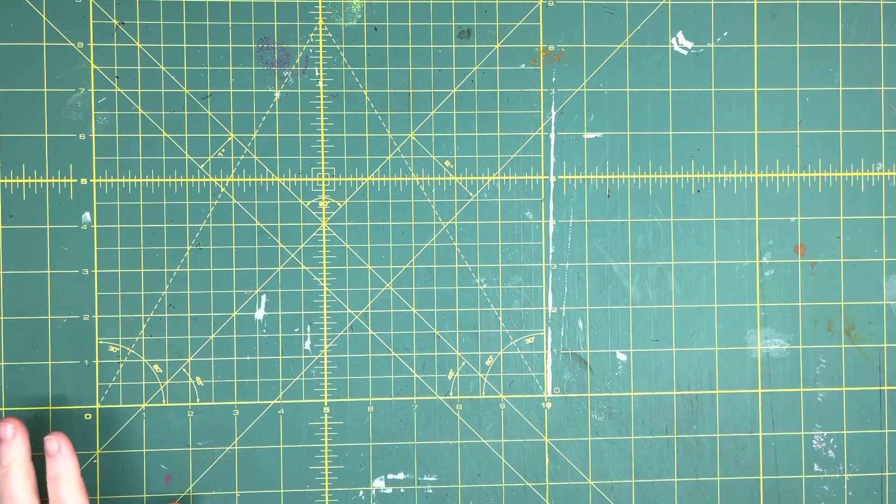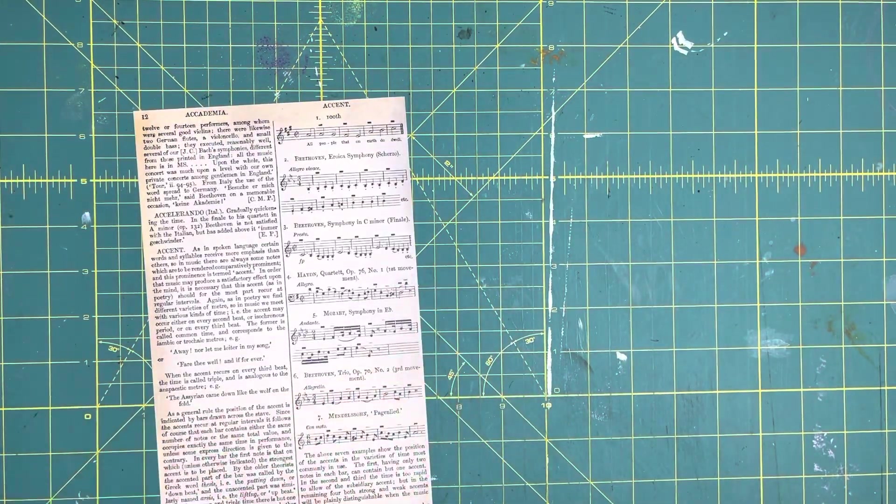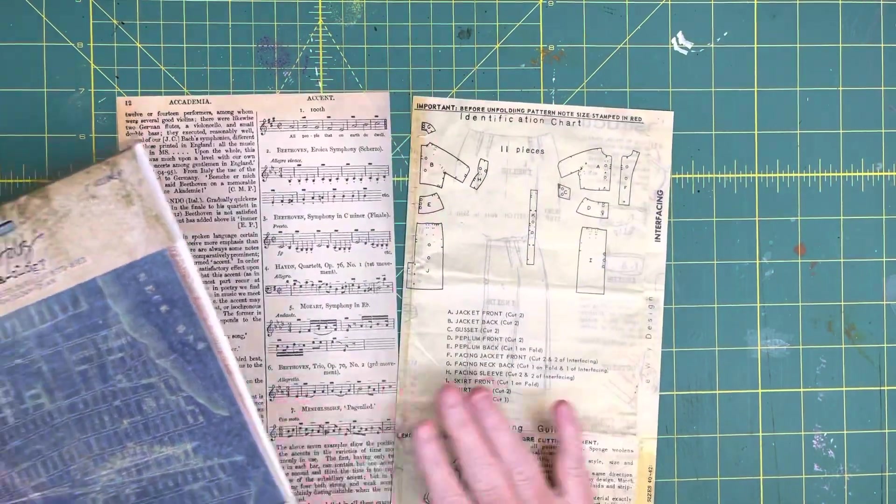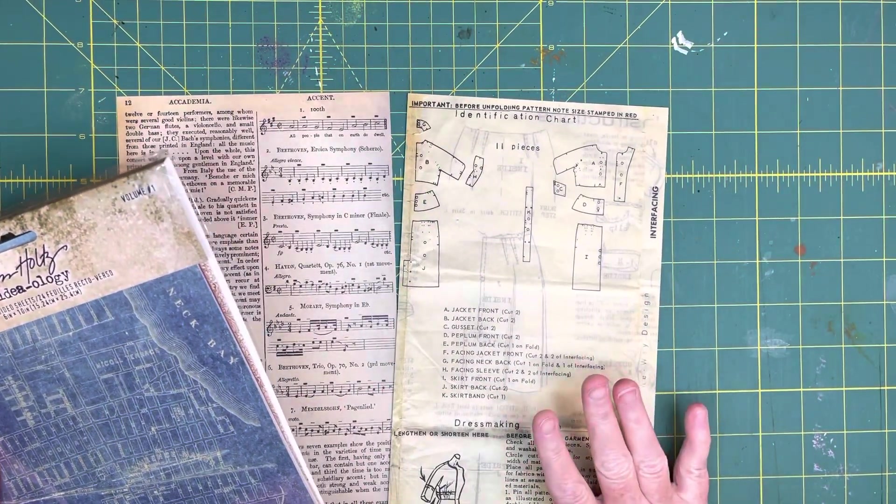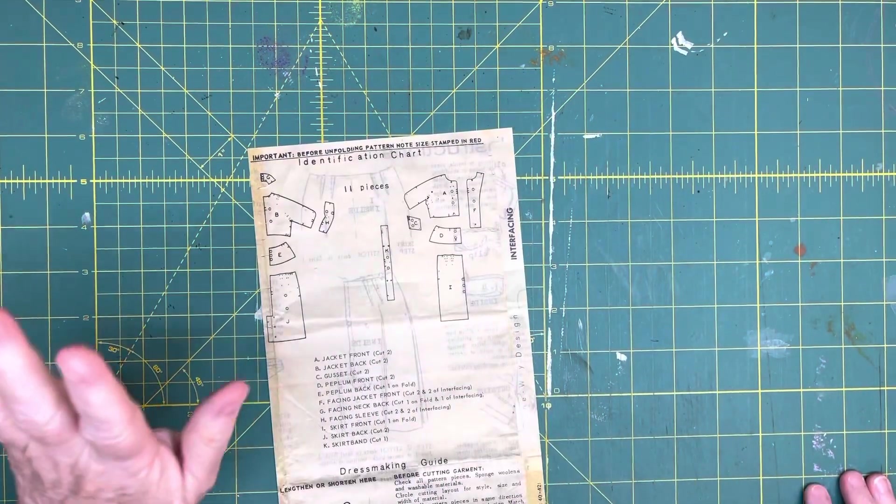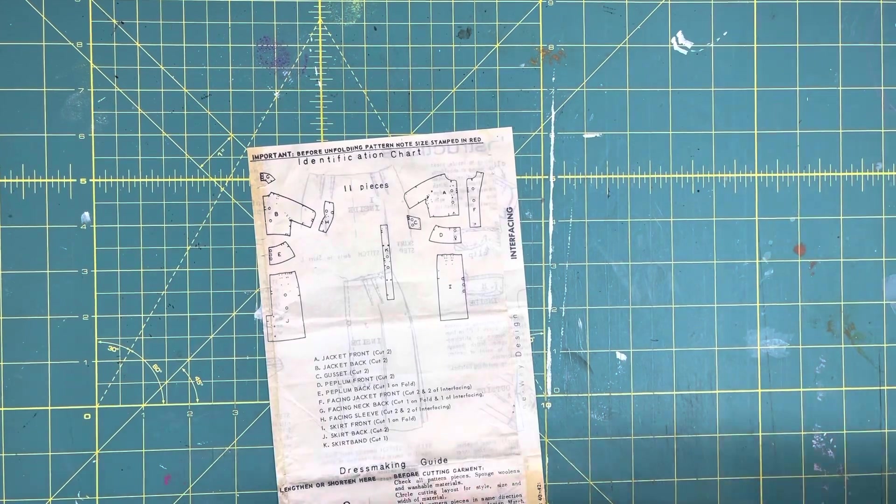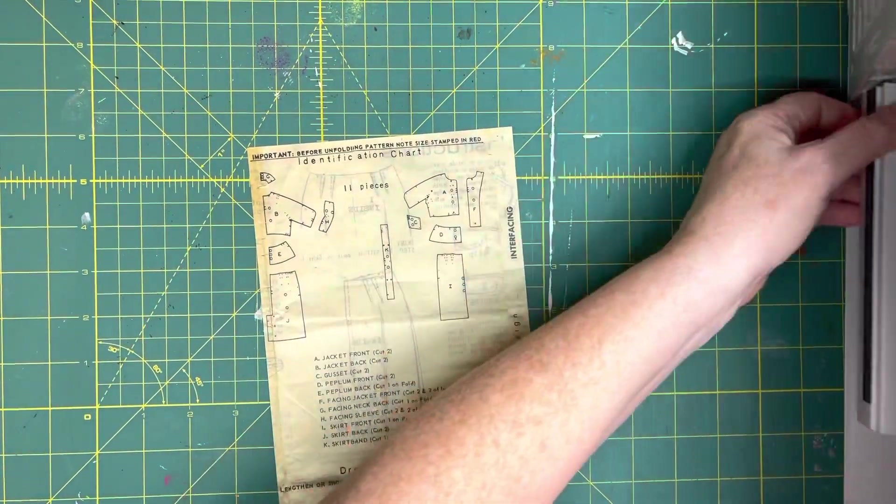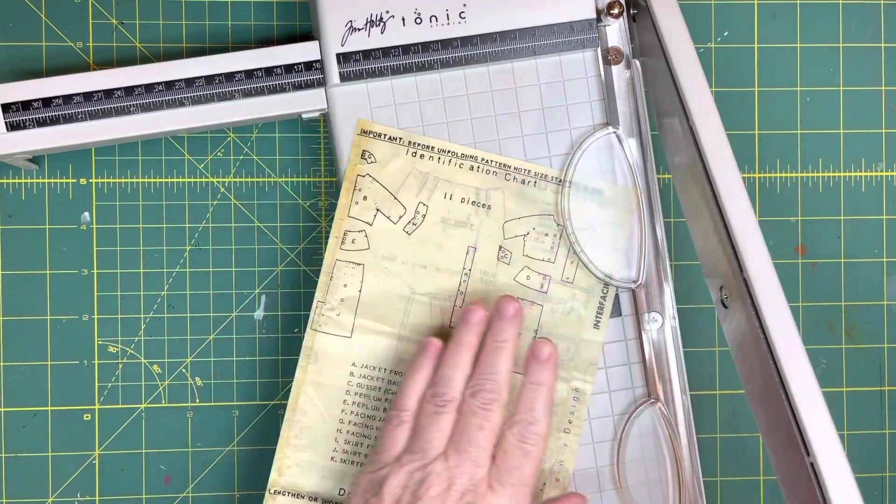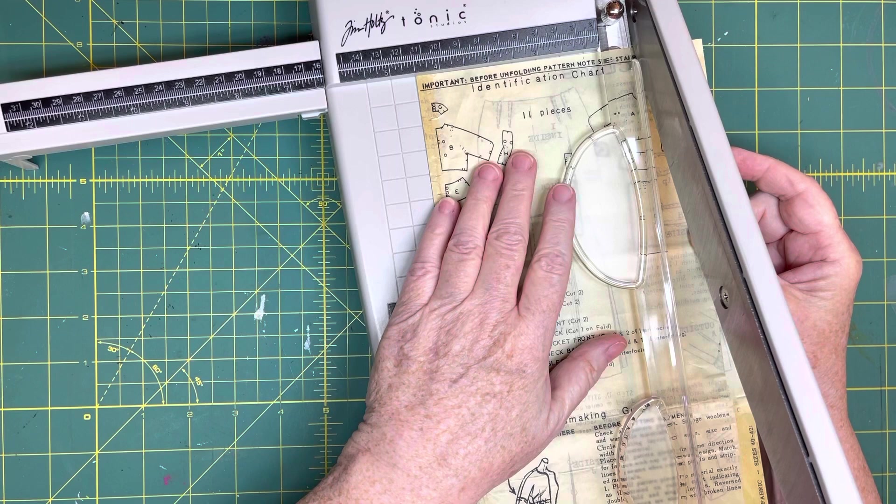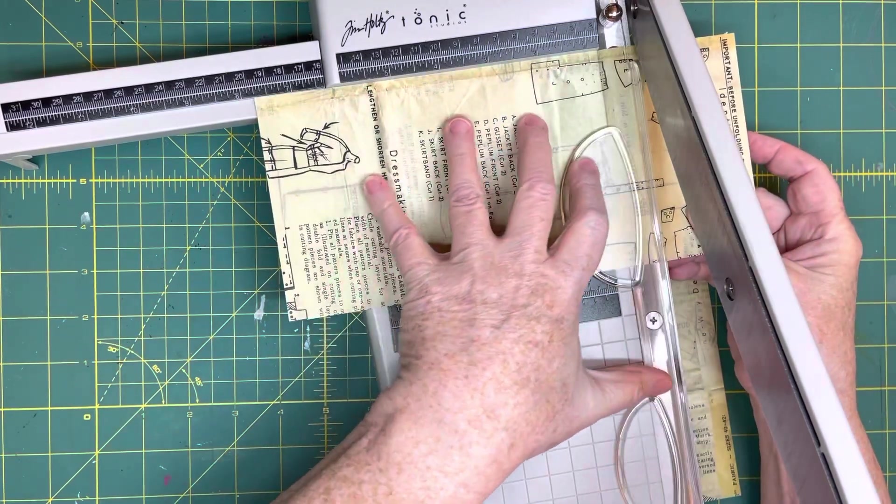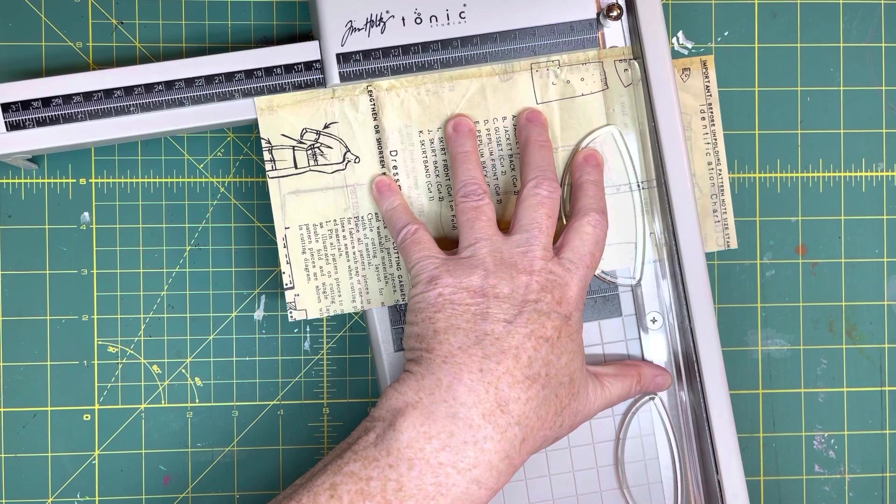I'm using Tim Holtz paper from his Ideology Volume 1 Backdrops. I've got a couple of pieces here. I think I'm going to use this one. So we'll put this other one aside. And let me get my paper trimmer together. I'm going to cut this paper four and a half inches wide by seven and three quarter inches long.